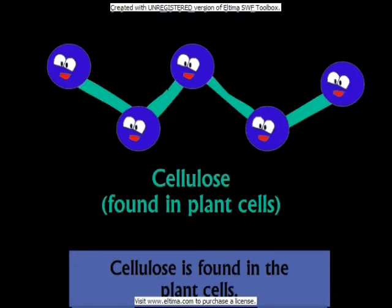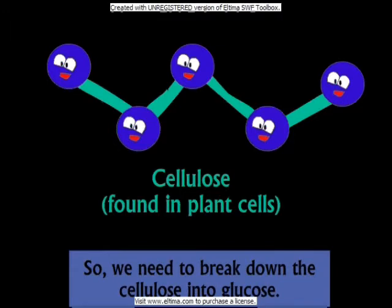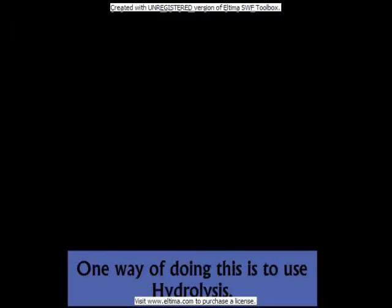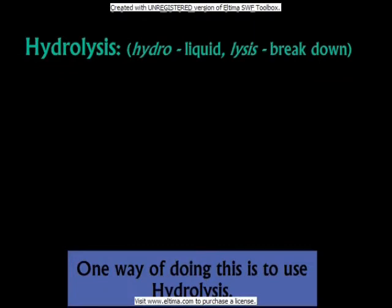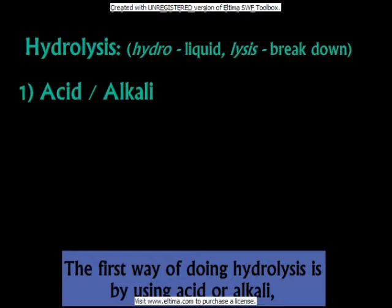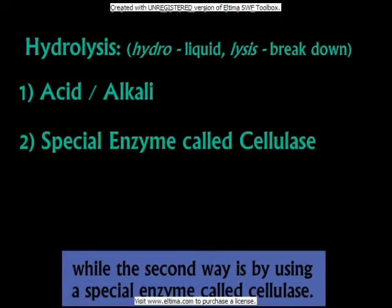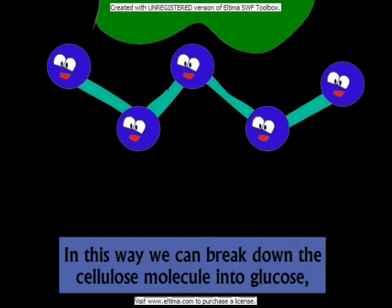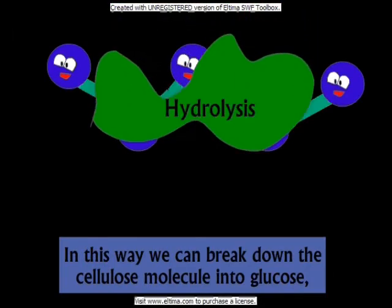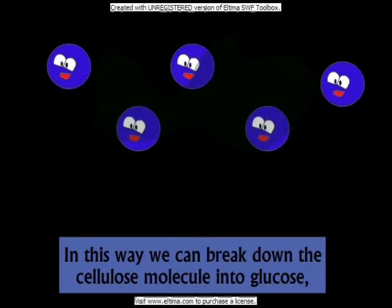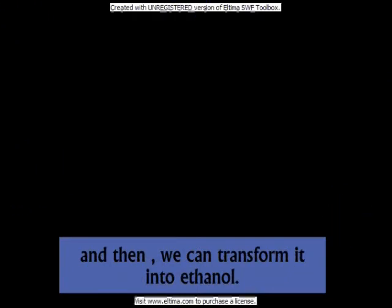So we need to break down the cellulose into glucose. One way to do this is by using hydrolysis — either by adding acid or alkali, or by using a special enzyme called cellulase. In this way, we can break down the cellulose molecule into glucose and then convert it into ethanol.